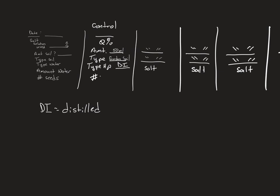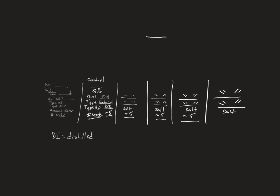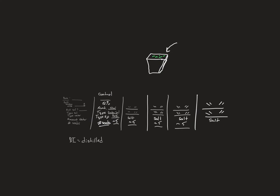A number of seeds — probably around five seeds each. You're going to have this little pot with soil in it, and on the soil you'll put about five seeds. Keep the seeds on the surface, because what's going to stimulate their growth is light. If you bury them too deep, they won't start growing.